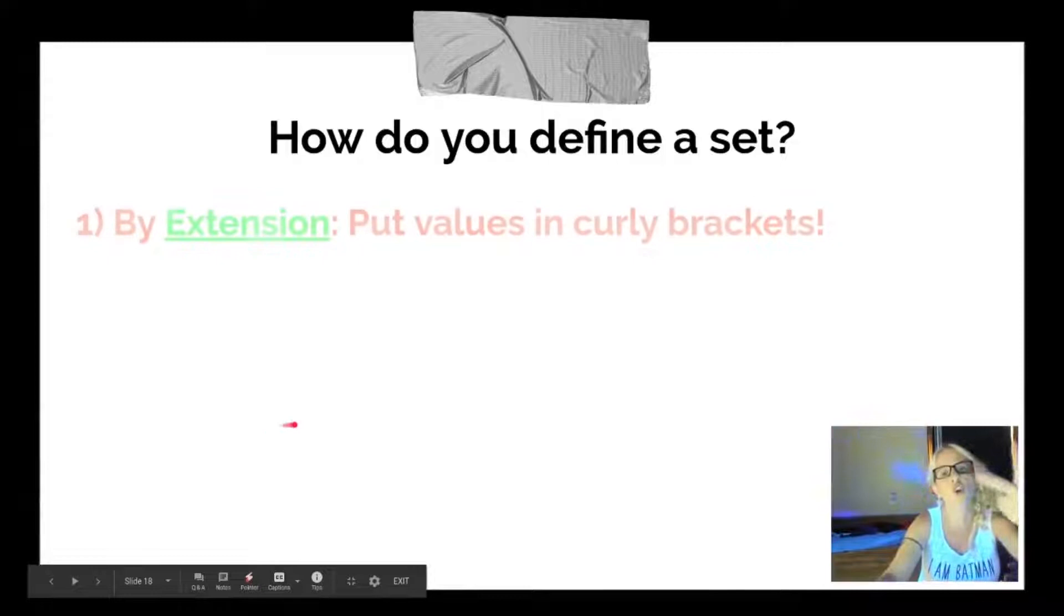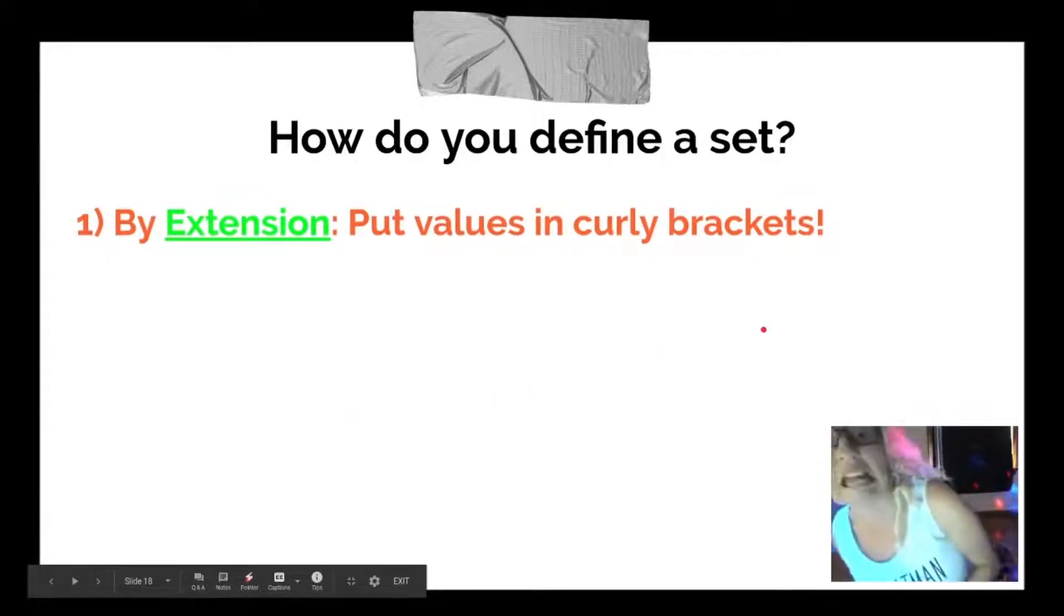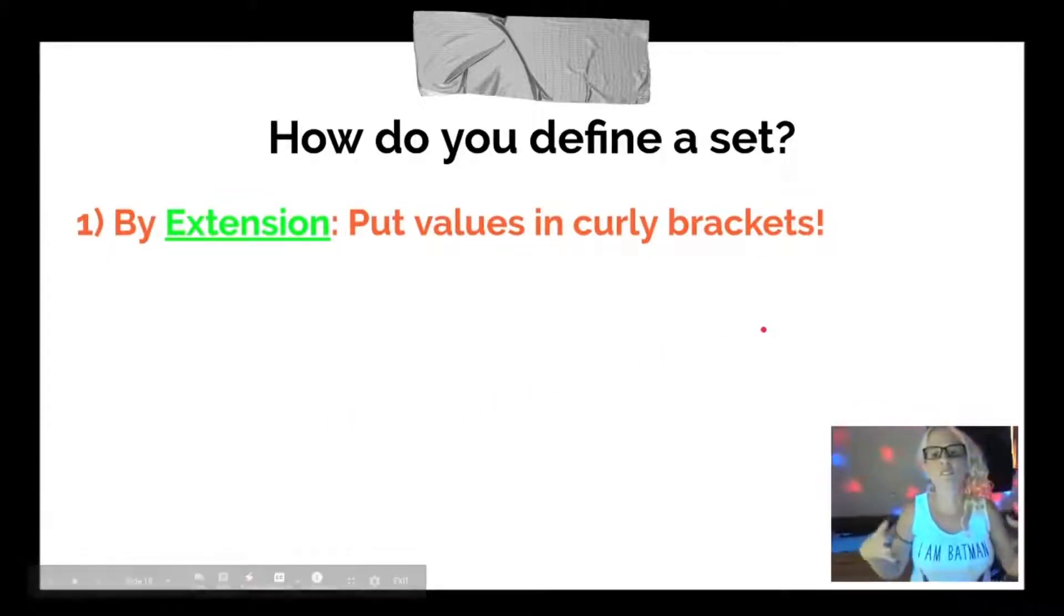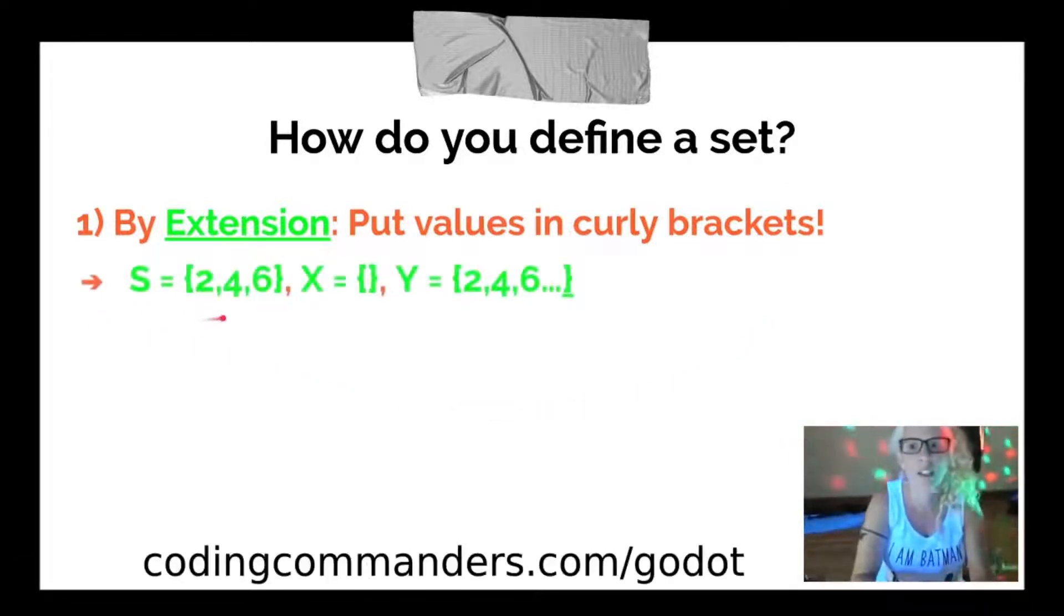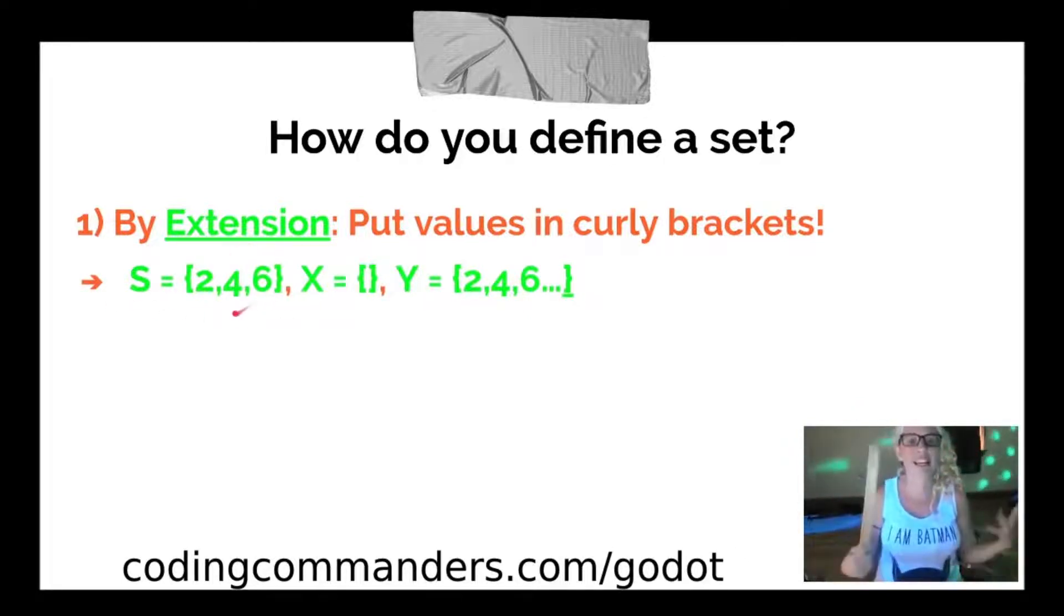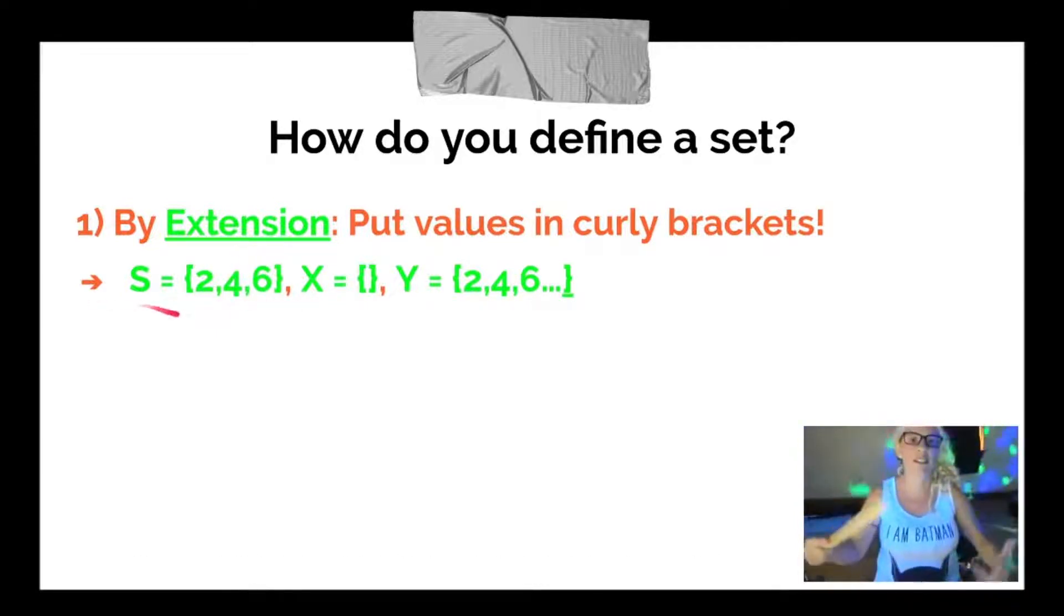There's two ways. The first way is by extension. That is put values in curly brackets. So the first way we're going to do this is by putting values in curly brackets. Here are some examples. Set S equals 2, 4, 6. In this example, the set is going to equal 2, 4, and 6. Those are the only numbers included in the set.